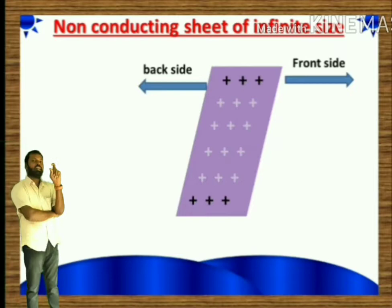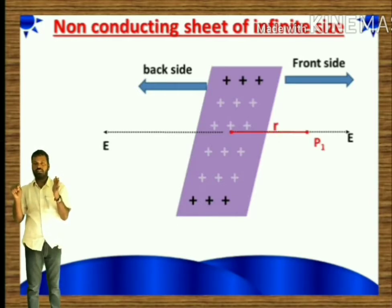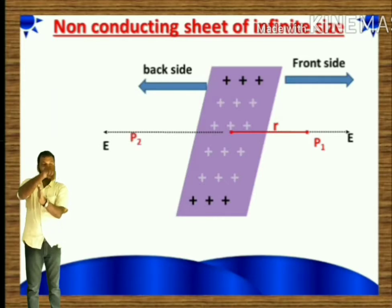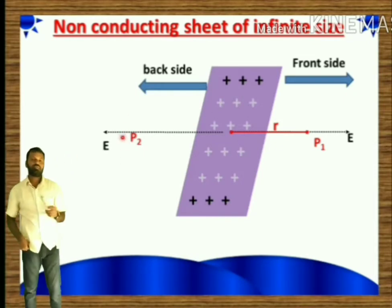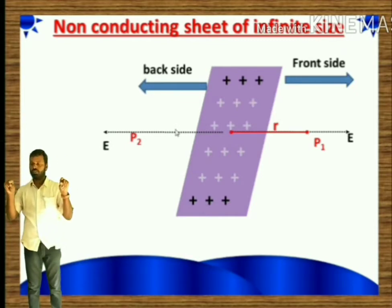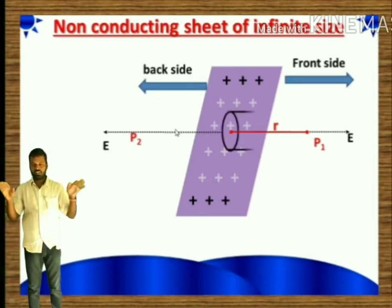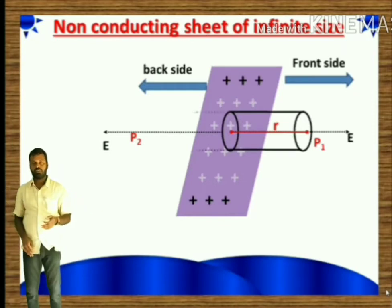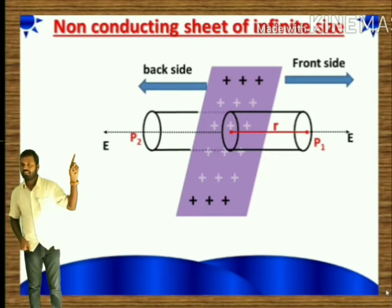I have to find the electric field at a distance R from this sheet. There is a point P1 at distance R from the sheet. To find the electric field at this point, imagine a symmetrical point P2 at the same distance R on the back side of the sheet. Now draw a Gaussian surface joining P1 and P2 — this forms a Gaussian cylinder.